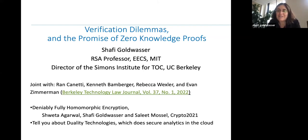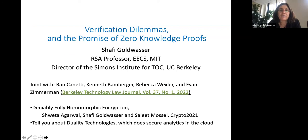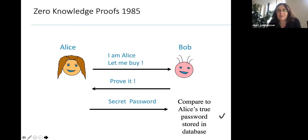I really encourage you to ask questions. It's a bit hard to talk to a crowd whose faces I can't see, so I'd love it if people pipe up. And now I think you can unmute yourselves — if not, send something in the chat. Okay, just a brief review which most people here probably know, but just to put us in context — this is ancient history from 1985, where the idea of a zero-knowledge proof came up.